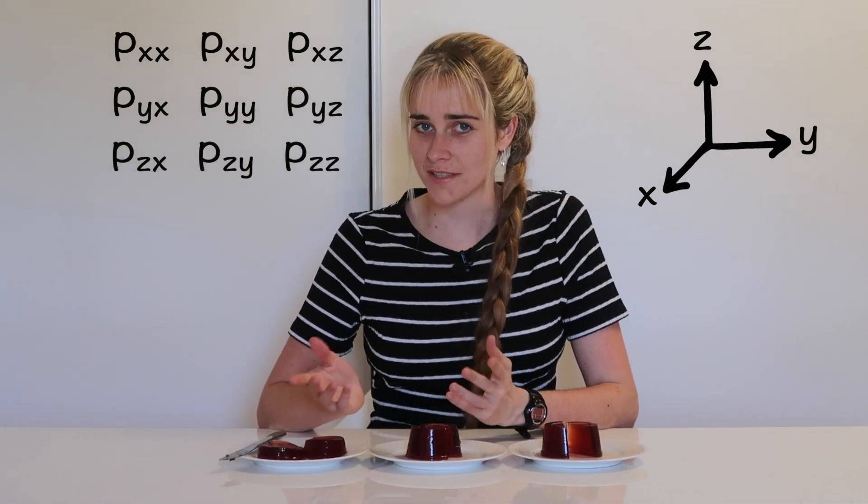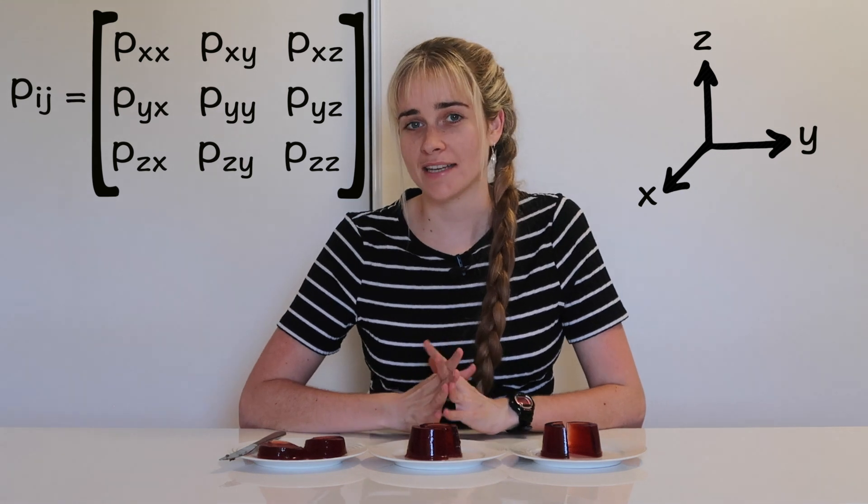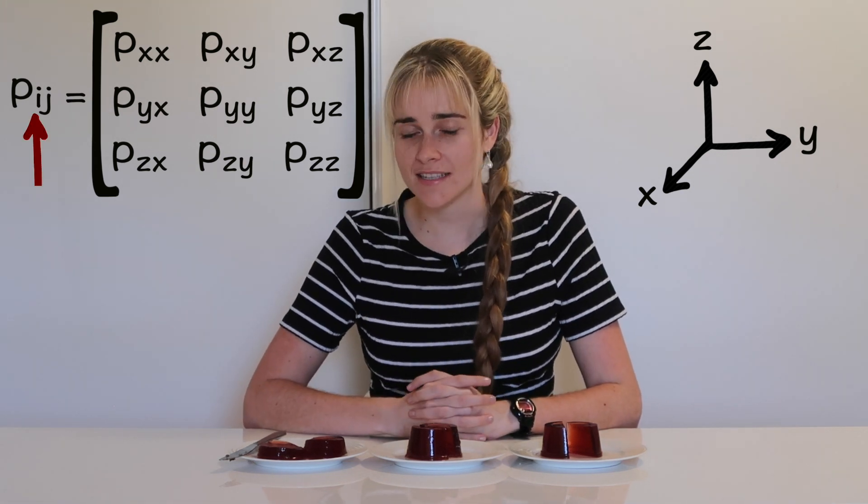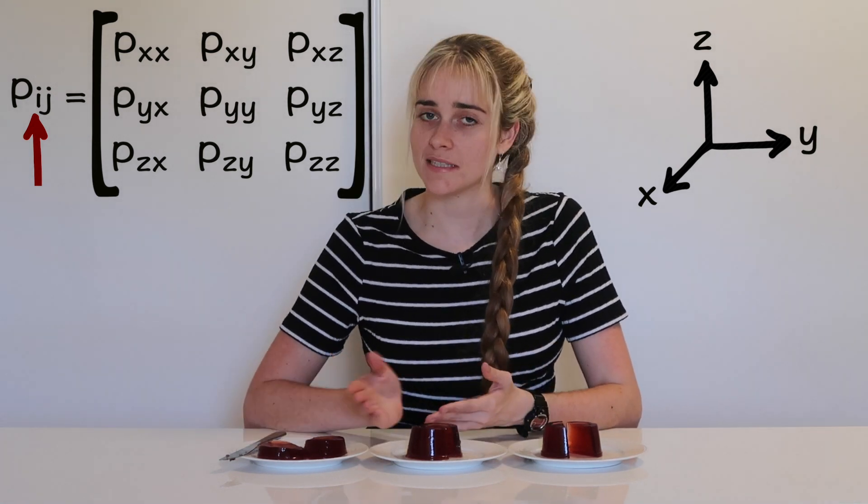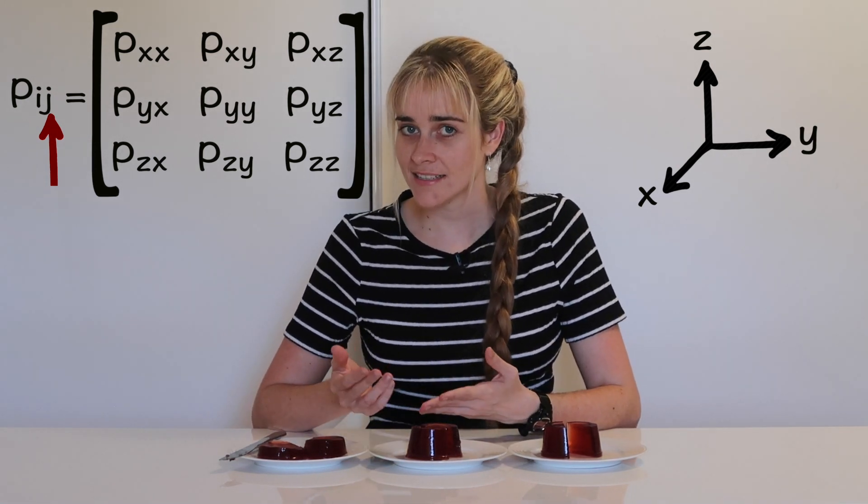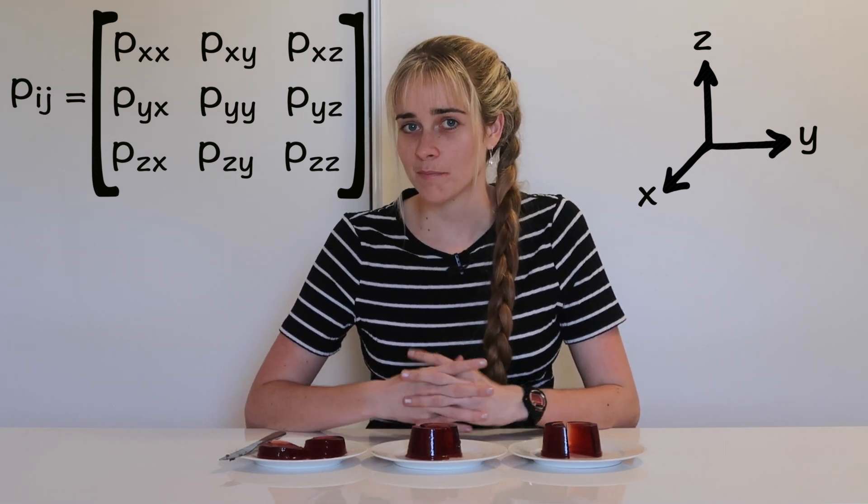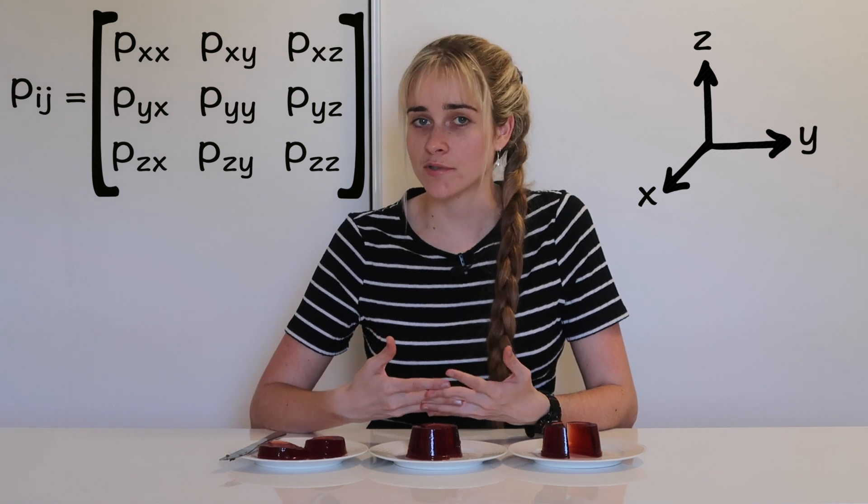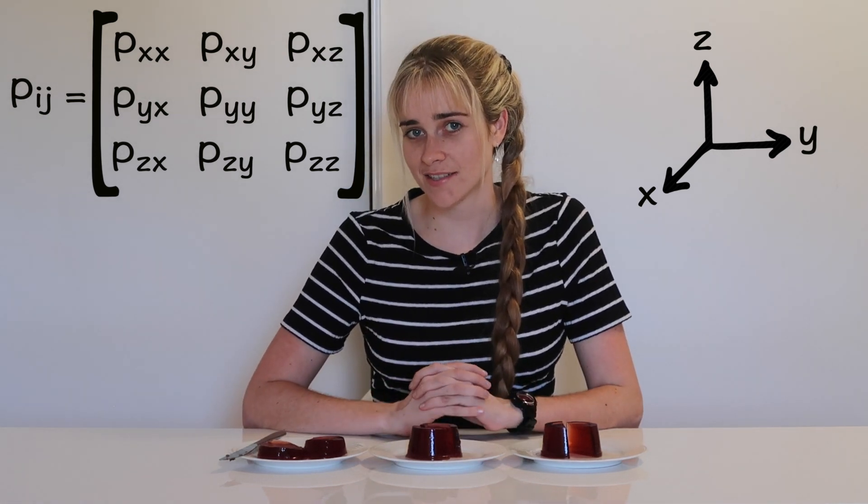Considering the forces on each of these faces we would end up with a matrix with nine components. The first index of each component would refer to the direction that each face is perpendicular to and the second index would refer to the direction of the force on that face. Because two directions are used to describe each component this would be a tensor of rank two.